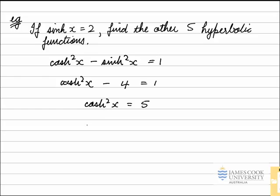Take the square root and we'll see that cosh x is equal to plus or minus the square root of 5. Here we need to make a decision. We've got two answers, plus and minus.